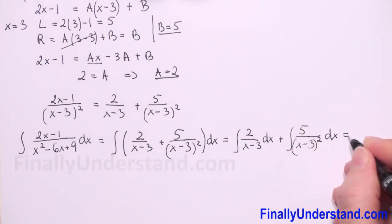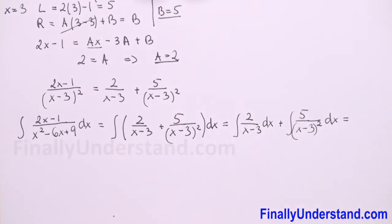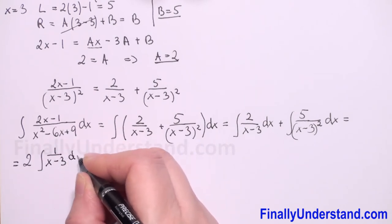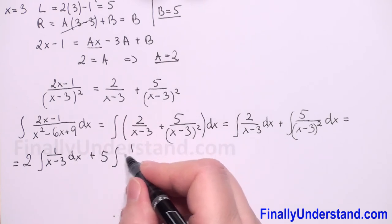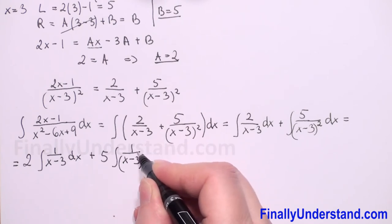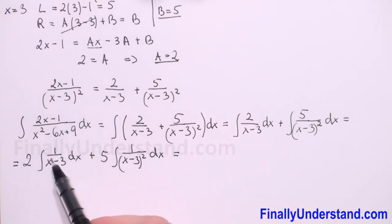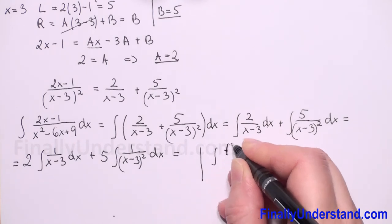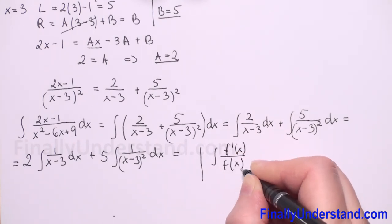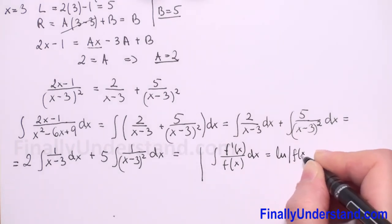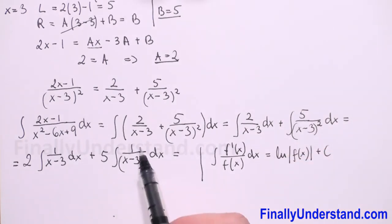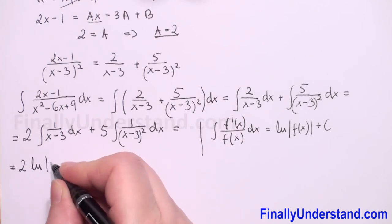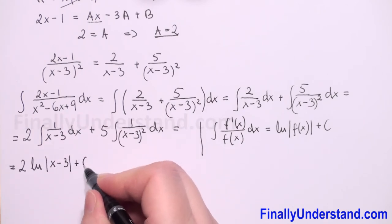We pull the constants before the integrals: 2 times the integral of 1 over (x minus 3) dx, plus 5 times the integral of 1 over (x minus 3) squared dx. For the first integral, the numerator is the derivative of the denominator, so we use the formula: integral of f'(x)/f(x) dx equals the natural logarithm of the absolute value of f(x) plus constant. This gives 2 times the natural logarithm of the absolute value of (x minus 3) plus a constant.